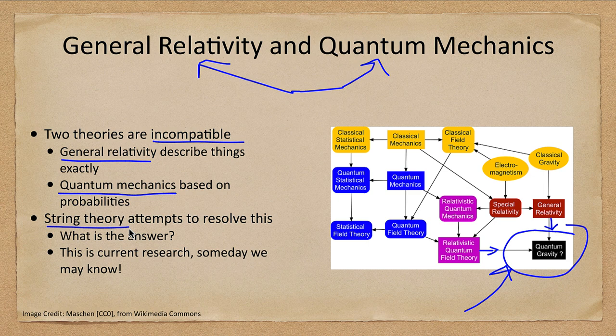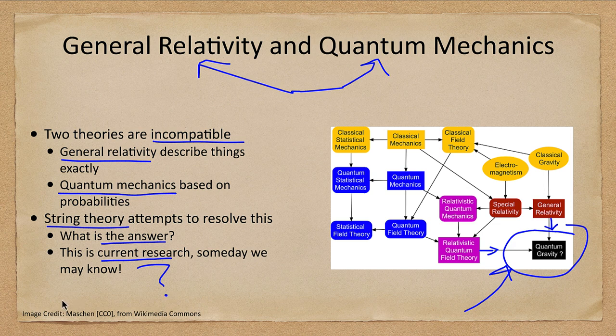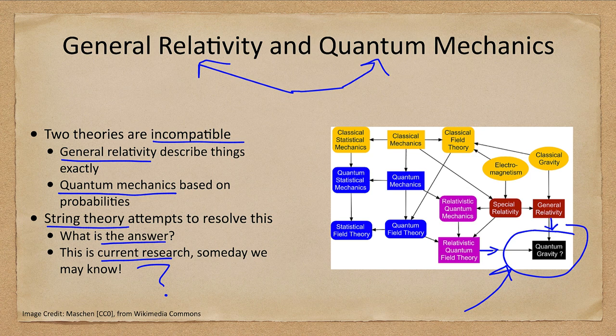String theory attempts to resolve this, but we're not there yet. What is the answer? I can't tell you. We're not there. This is current research. Maybe someday we will have the answer. Could it be in a decade or a century or a millennium? How long will it take us to be able to better understand how to merge quantum mechanics and general relativity?